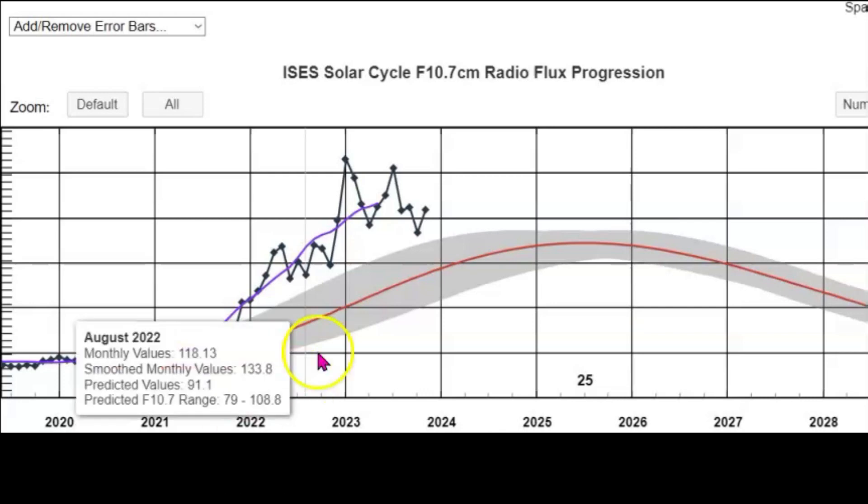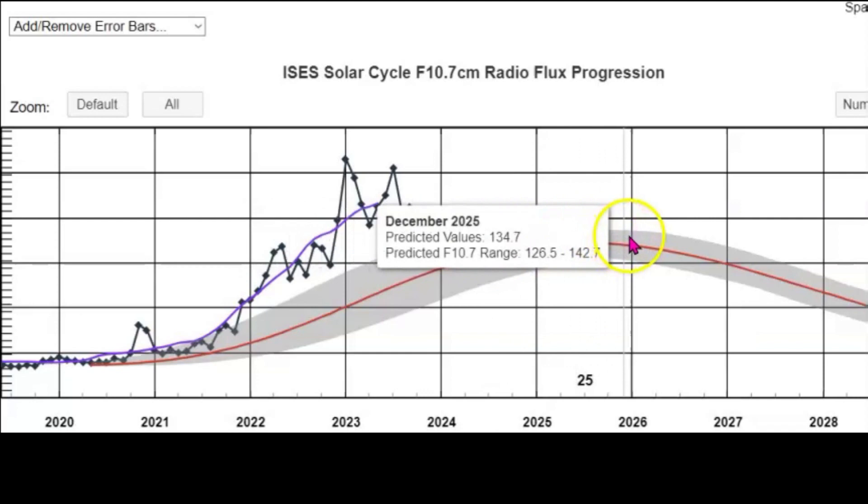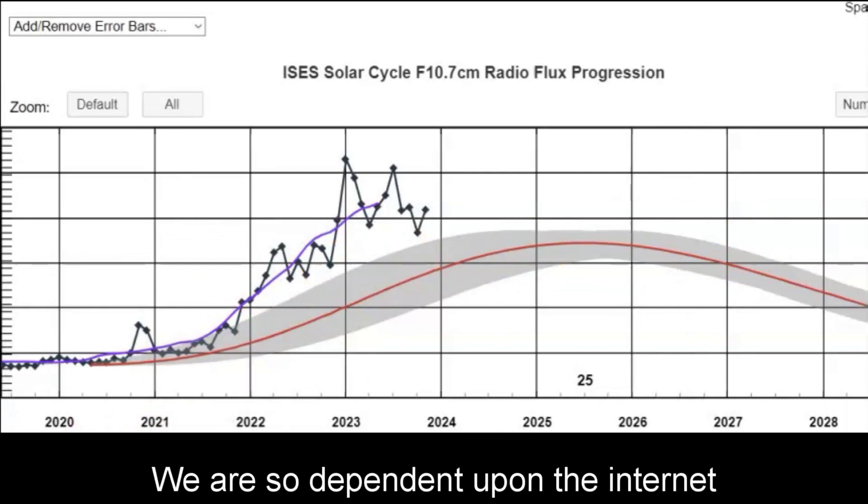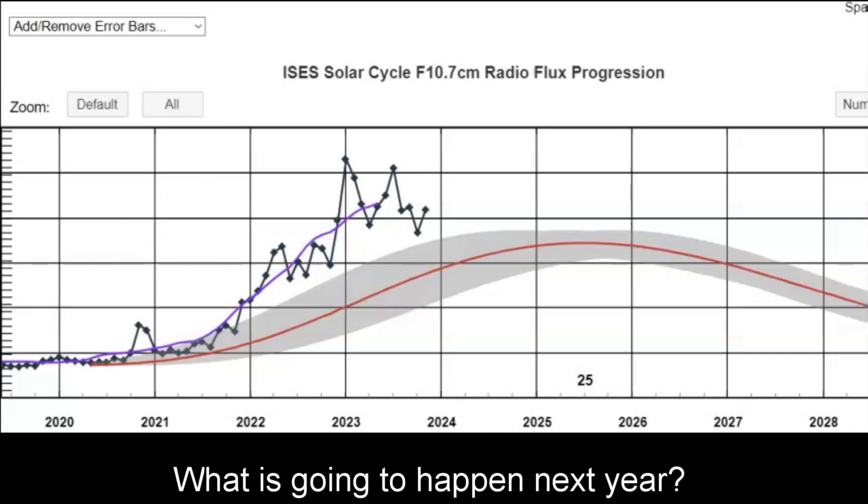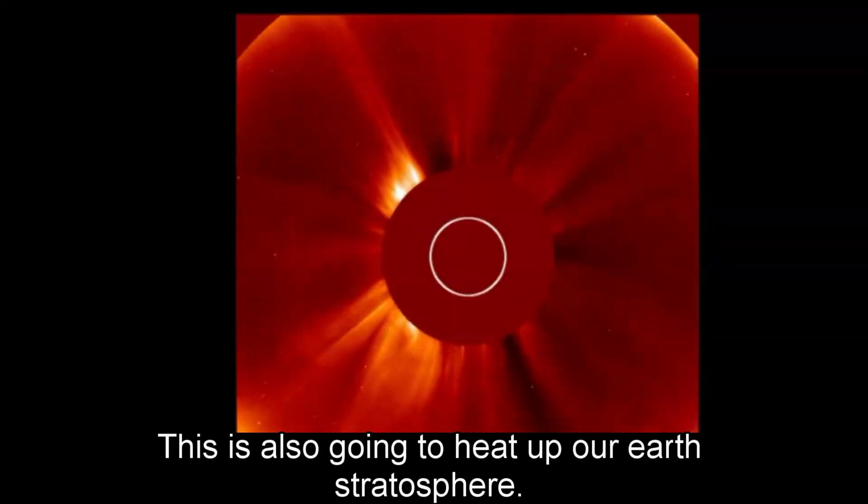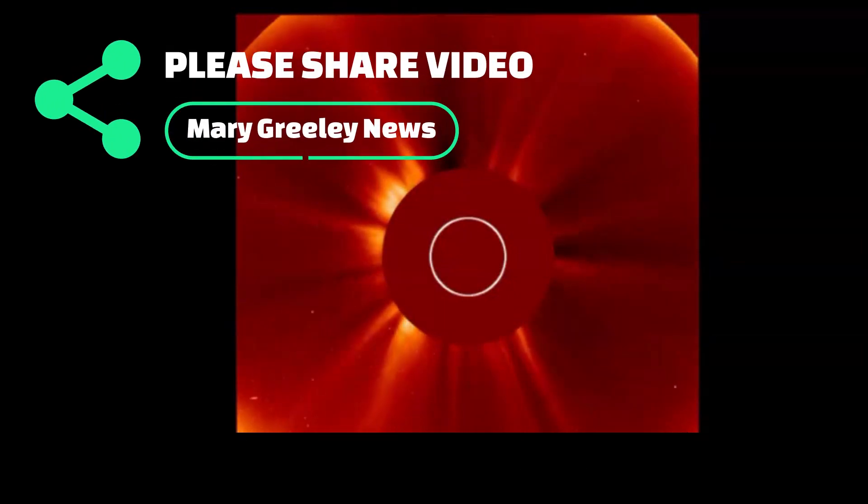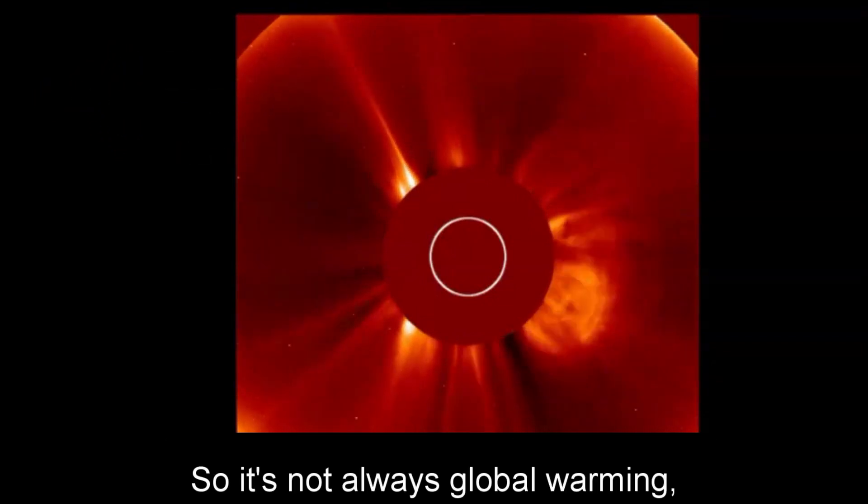Here it shows the solar cycle. And looks like next year and into 2026, 2027. We are so dependent upon the Internet and our power. And it's just starting. Look at that. What is going to happen next year? This is also going to heat up our Earth stratosphere. I've talked about that before. How when they impact our Earth, how it heats it up. So it's not always global warming.